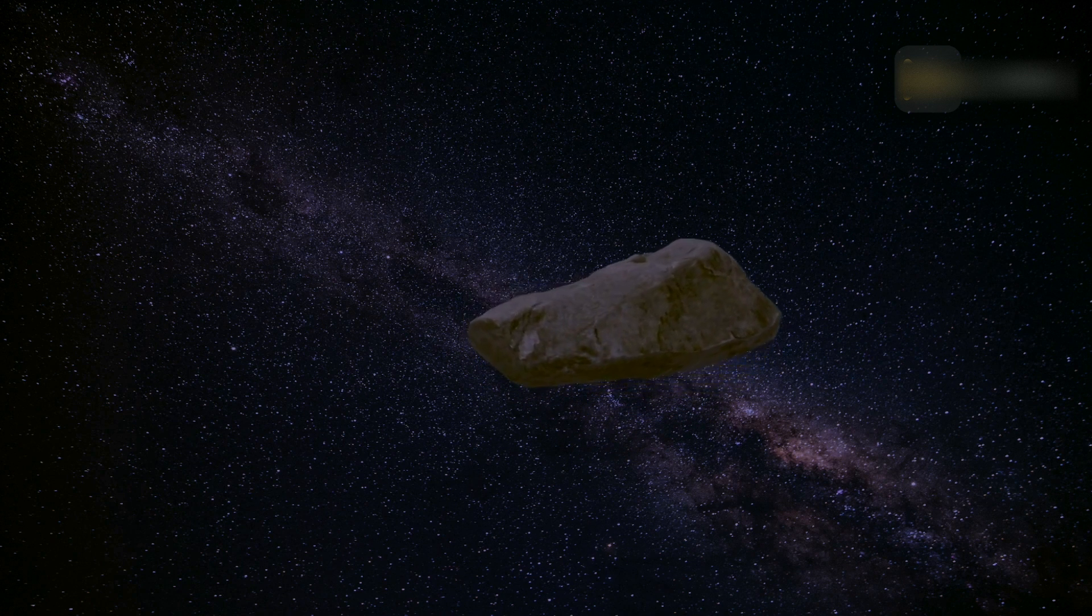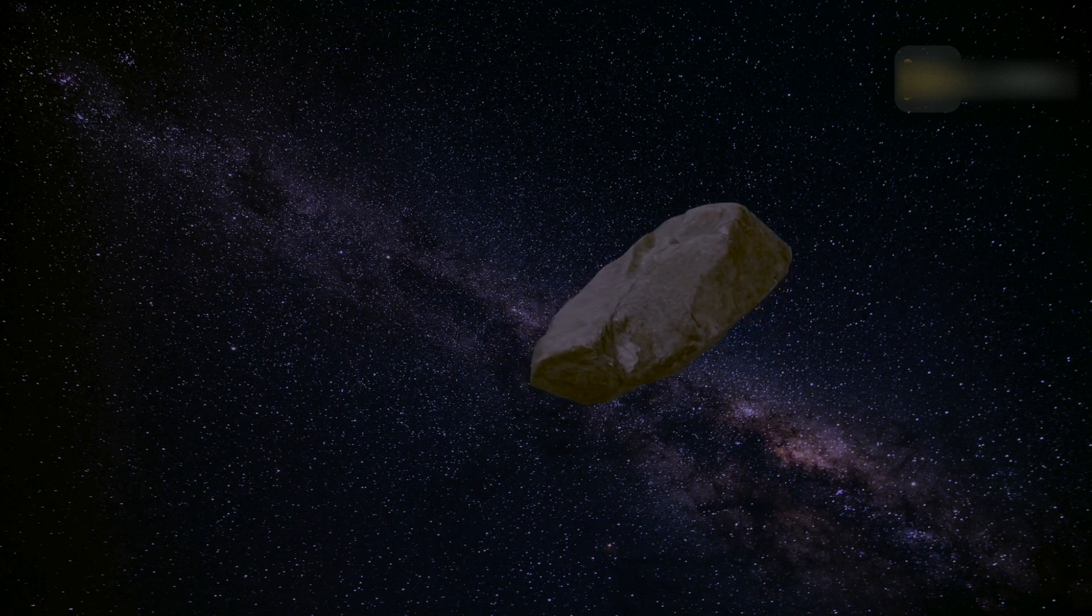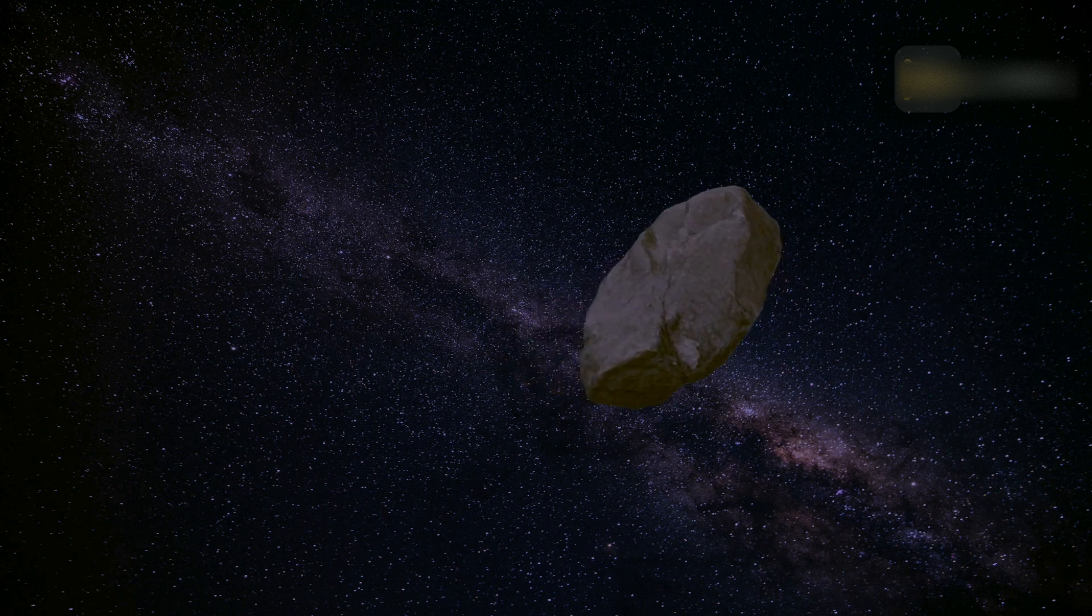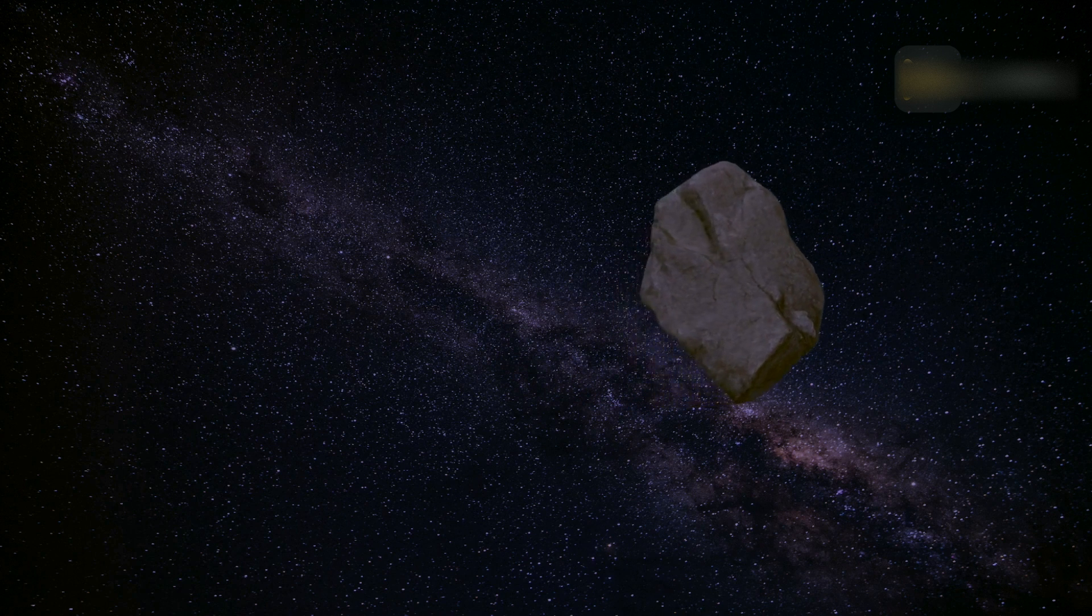An asteroid named 2007 FT3, which is also known as a lost asteroid. The space body was named as Lost Asteroid because astronomers haven't seen it since 2007, and its trail is unpredictable.